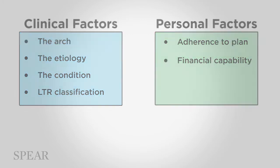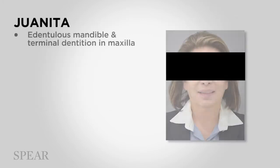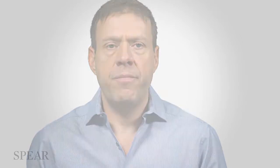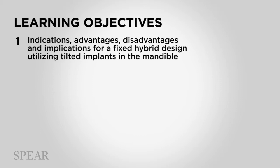So, in this module, we will look at treatment planning a patient who was edentulous in the mandibular arch and had what seemed to be a terminal dentition in her maxilla. While there are numerous things to talk about, we want to specifically dive into three ideas. One: the indications, advantages, disadvantages, and implications for a fixed hybrid design utilizing tilted implants in the mandibular arch.